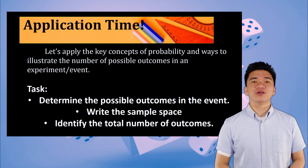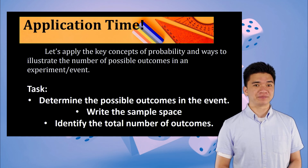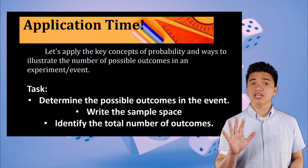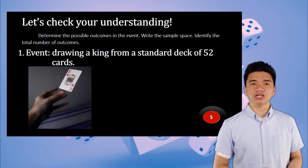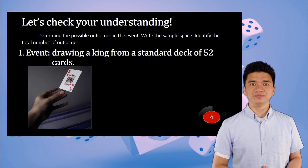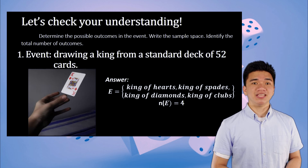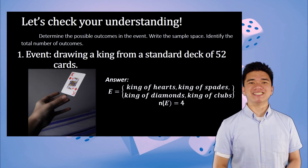Application time. Let's apply these concepts in the following problems. Number 1: Determine the possible outcomes in the event of drawing a king from a standard deck of 52 cards, then write the sample space and the total number of outcomes. The sample space is E = {king of hearts, king of spades, king of diamonds, king of clubs}. The total number of outcomes is N(E) = 4.